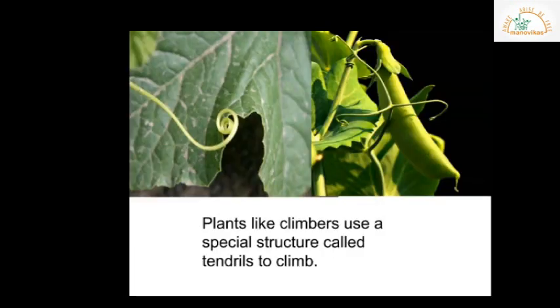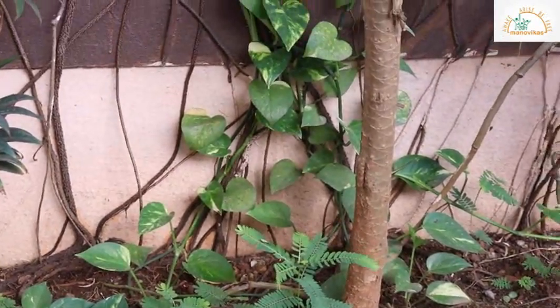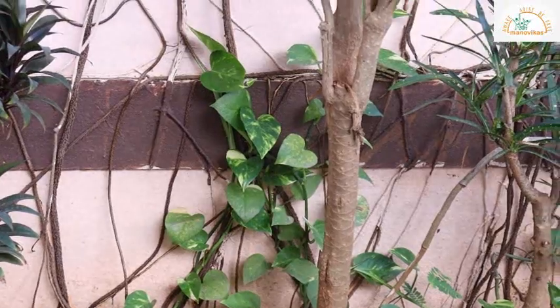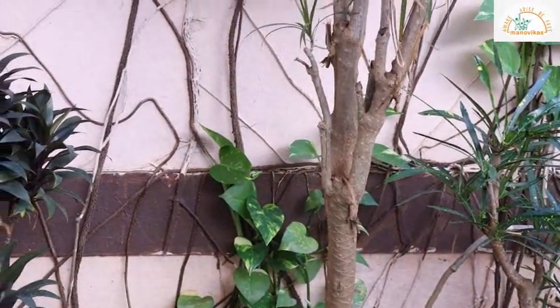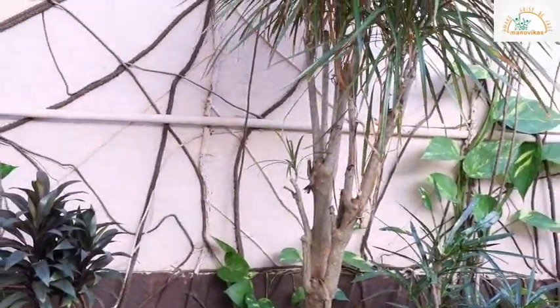Plants like climbers use a special structure called tendrils to climb. A tendril is a thin, curling stem of a climbing plant which turns around a support. They usually use a stick or even the walls of buildings for support. The money plant is an example of a climber — it cannot grow straight on its own, needs support, and has weak stems.